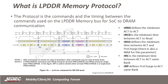The protocol is the commands and the timing between the commands used on the LPDDR memory bus for system-on-chip to DRAM communication. Here are a few examples of some of the more common symbols and the corresponding parameters. The TXXX is the symbol, and the parameter is the description of what the symbol means.